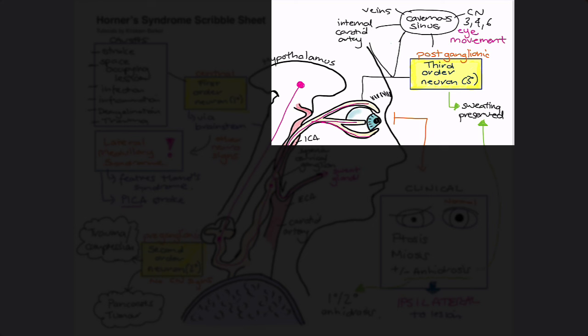For third-order neurons, some follow the internal carotid artery into the cavernous sinus, so they are at risk from internal carotid artery dissection or aneurysm — likely associated with significant neck pain, headache, or even stroke features. A lesion in the cavernous sinus would affect the other cranial nerves there (cranial nerves 3, 4, and 6), so you might see Horner's syndrome combined with ipsilateral eye movement signs but without spinothalamic or spinocerebellar tract signs. With third-order neuron lesions, facial sweating is preserved, in contrast to more central lesions.